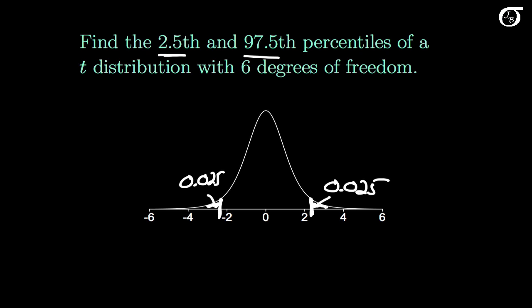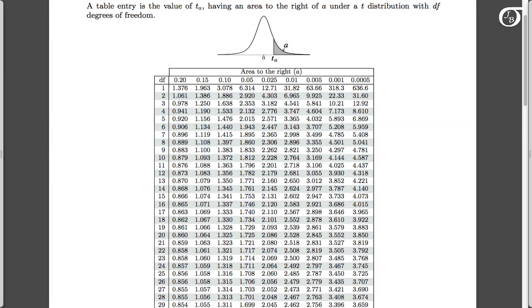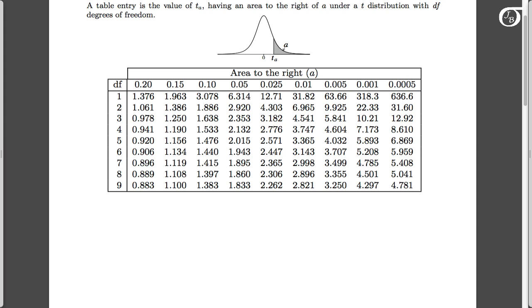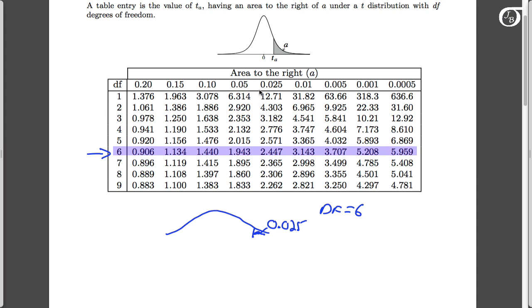So let's go to the table and find those values. Here's my t-table — some t-tables have slightly different formats. We have the degrees of freedom down the left-hand side. I'm going to restrict it to the smaller degrees of freedom. One of the values we need is the t-value with an area to the right of 0.025 under a t-distribution with 6 degrees of freedom. The table gives values of t in the body with a certain area to the right. We need the area to the right of 0.025, so this is the appropriate column. Going down to 6 degrees of freedom, the value we need is 2.447.